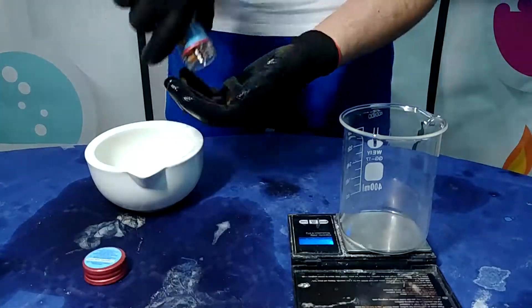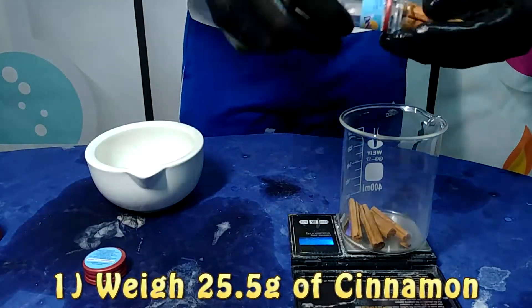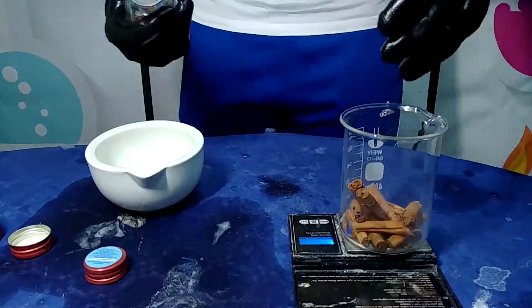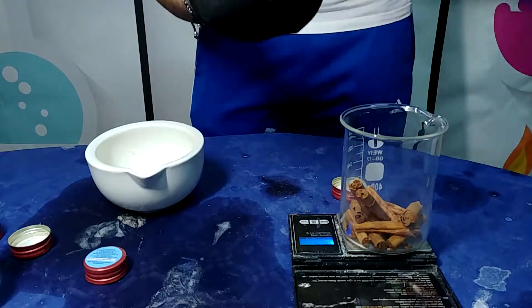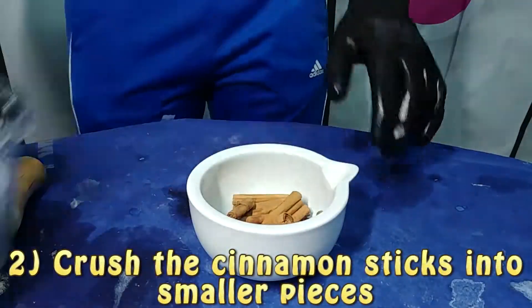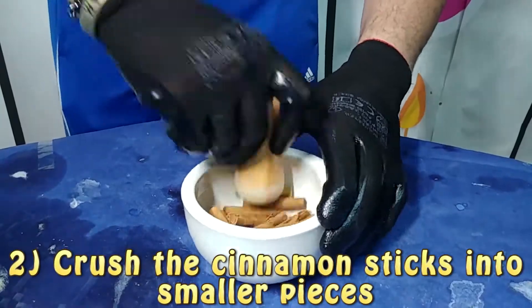So for this experiment first we are going to weigh 25.5 grams of cinnamon bark. Then we are going to take this cinnamon bark and crush it into small pieces in a mortar. After that we are going to put this cinnamon into our boiling flask and then add 200 ml of water and boil everything.